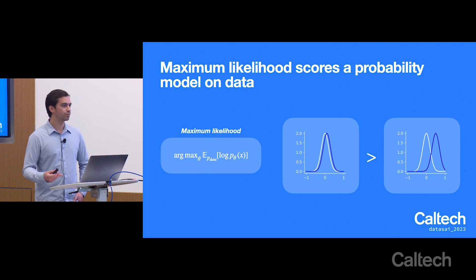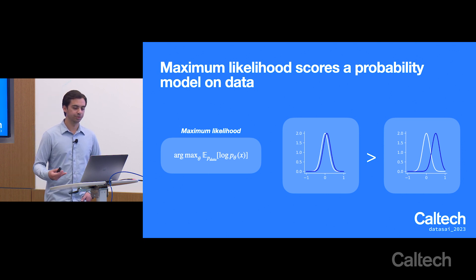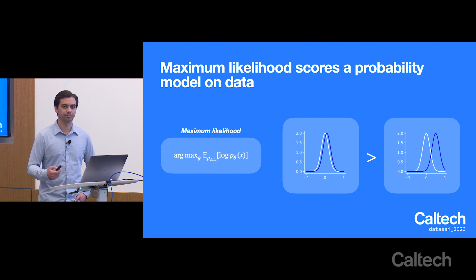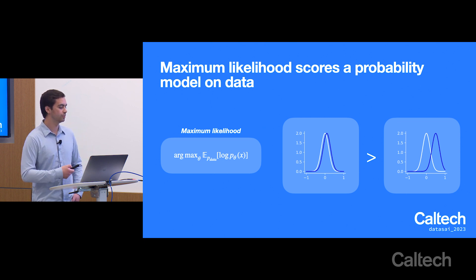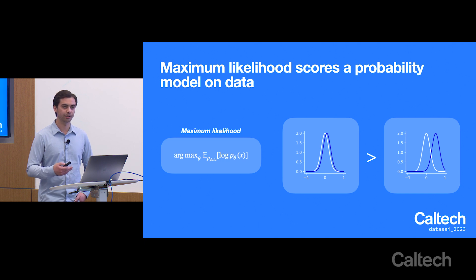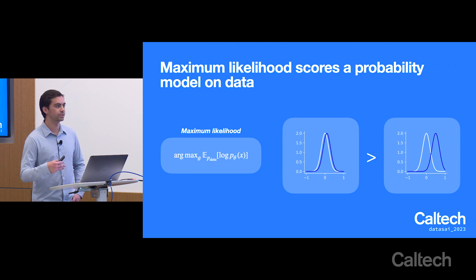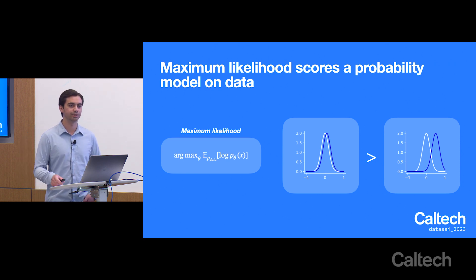Given these probability distributions, we want to find the distribution that is closest to our data. To do this, we employ a method called maximum likelihood. There are different methods in statistics to find the closest distribution to the true data-generating distribution, but maximum likelihood tends to be the most computationally tractable.